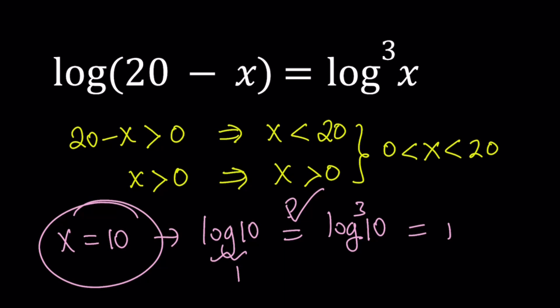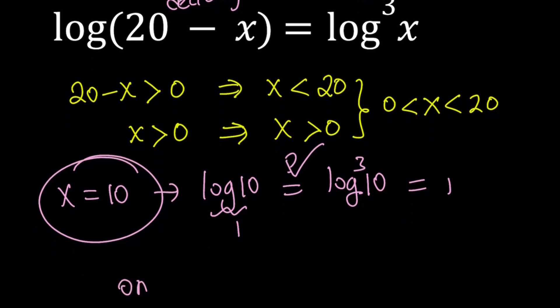But I want you to notice that log(20 - x) is a decreasing function on this interval. So this function is decreasing. And log x to the third power is increasing on that interval. So we basically have a decreasing function and an increasing function. They're equal. Therefore, there's only going to be one solution.